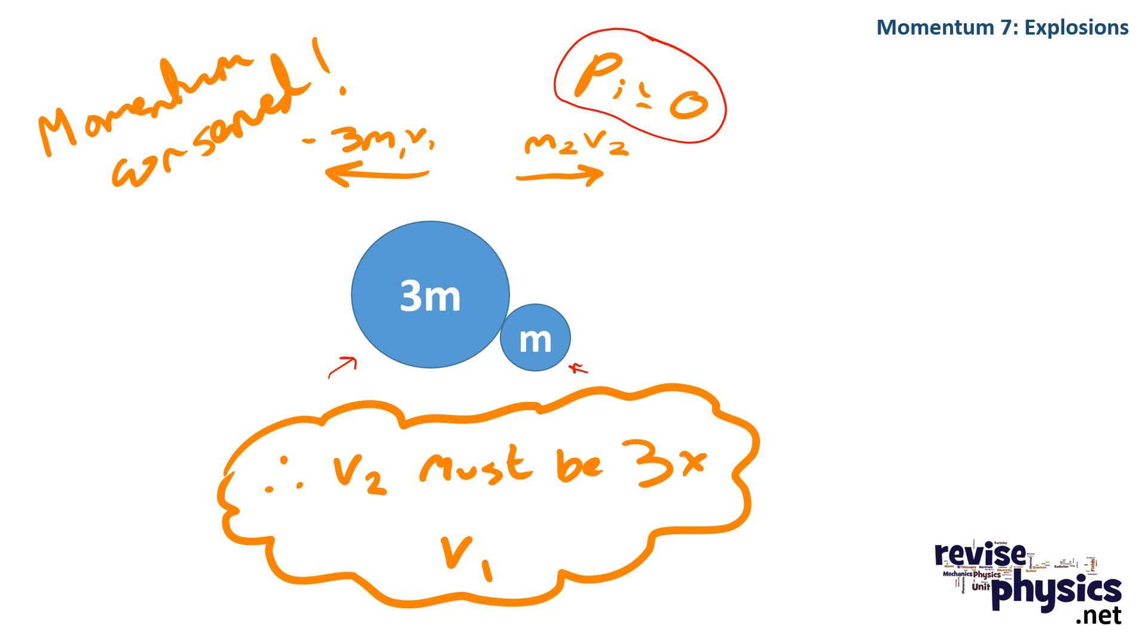If we write our conservation of momentum equation here, we can see that when they separate as a result of an explosion, the one with the greater mass has a much smaller velocity.